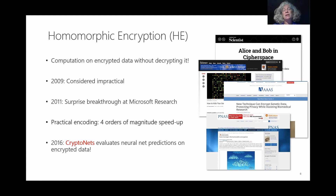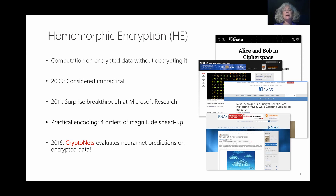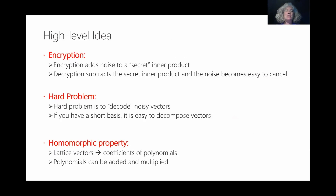Zooming forward to 2016, a project in my team called CryptoNets was published at ICML 2016 and showed that neural net predictions were actually possible on encrypted data. Since then, there's been a lot of follow-up work from many, many teams. The high-level idea of the solutions proposed and implemented today is based on lattice-based encryption.